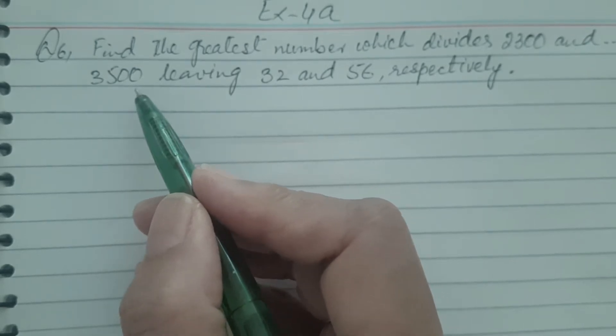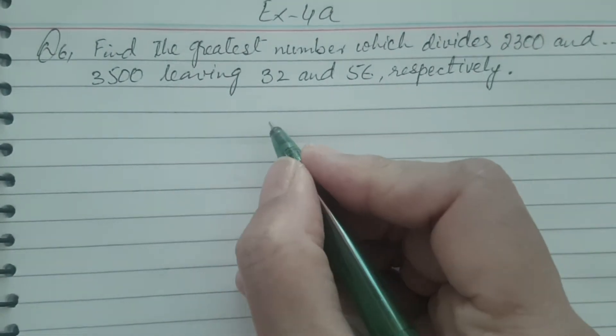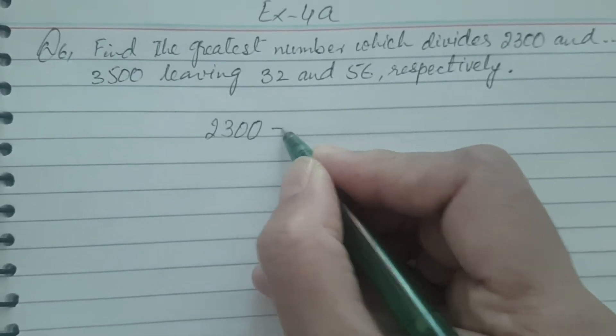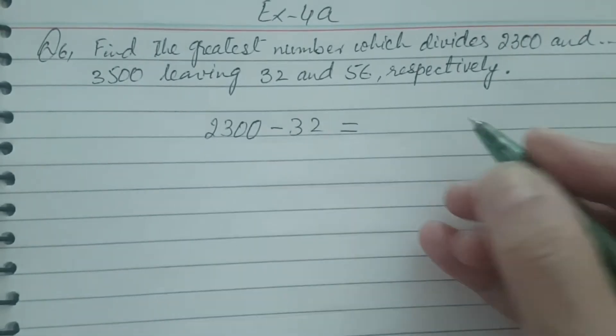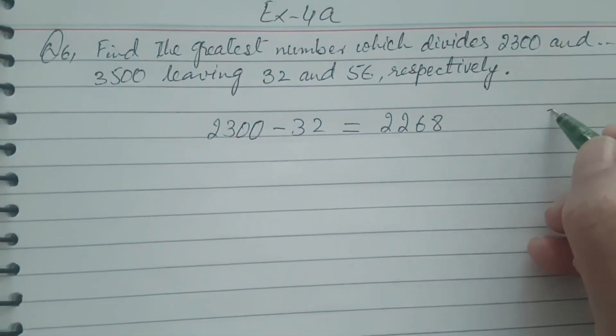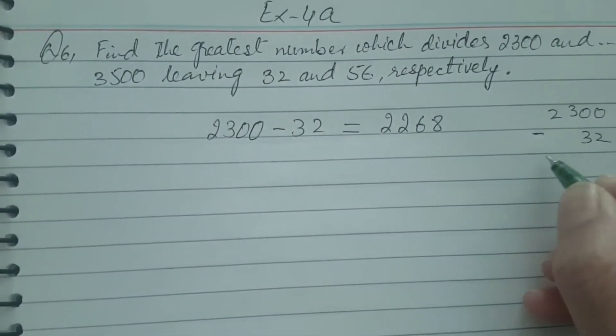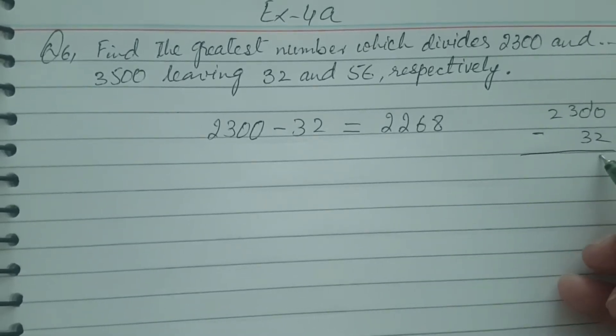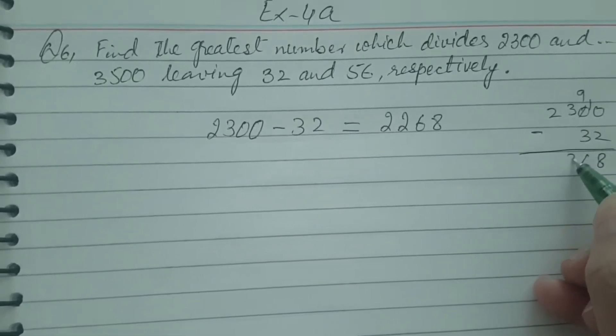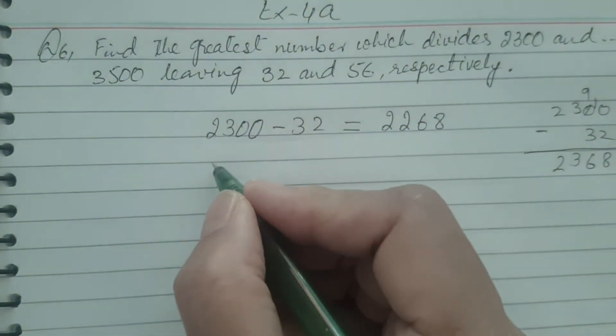So we will subtract from 2300 the remainder 32, and we will get the number 2268. You can do the rough work: 2300 minus 32. 10 minus 2 is 8, 9 minus 3 is 6, then 3 and 2. So 2268 is the number which is the exact divisor.